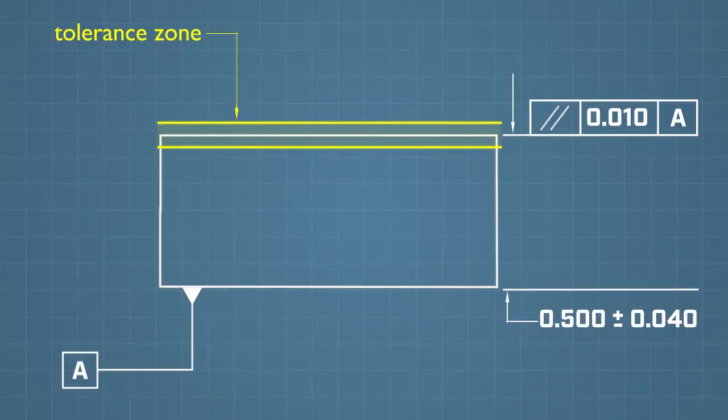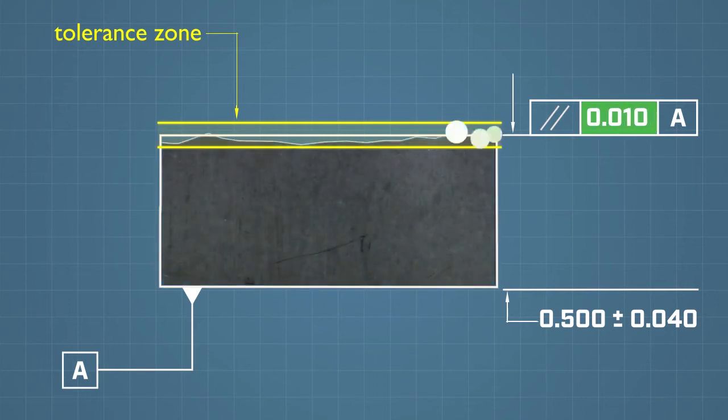In this example, the parallelism tolerance describes a planar tolerance zone that is the thickness of the listed tolerance. All points on the feature surface must lie between two planes, ten hundredths apart, and parallel to datum A.